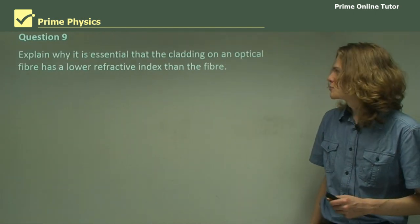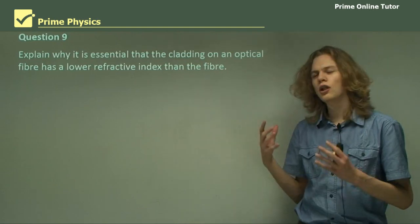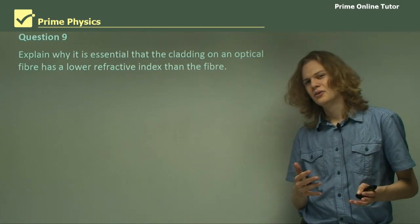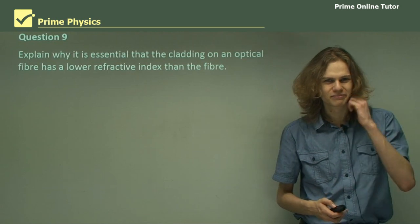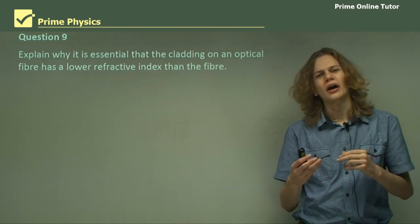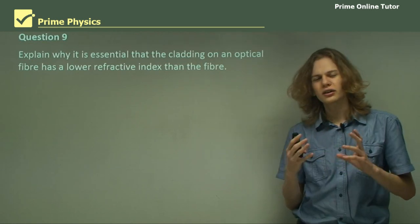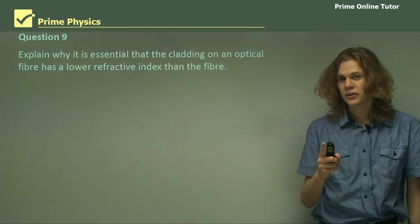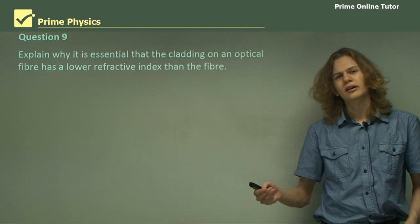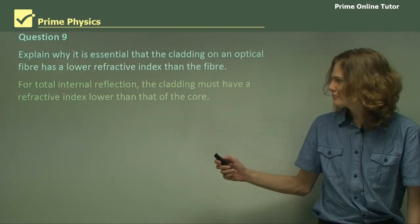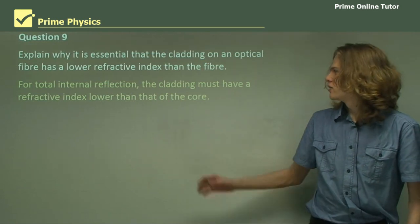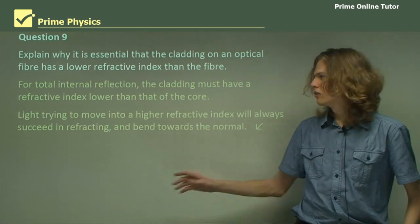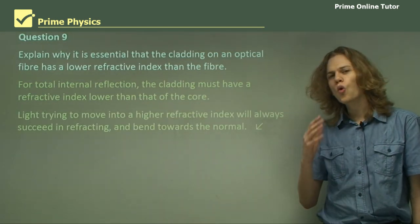Question 9. Explain why it is essential that the cladding of an optical fiber has a lower refractive index than the fiber. It has to do with the fact that you can't get a sine of any angle that is greater than 1 — you can, however, end up with a sine of an angle that is less than 1. So for total internal reflection, the cladding must have a refractive index lower than that of the core. And the reason for this is that light trying to move into a higher refractive index will always succeed in refracting.